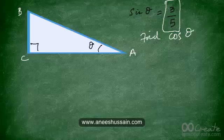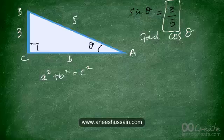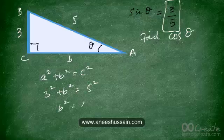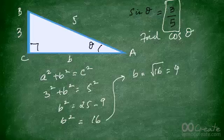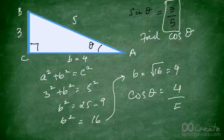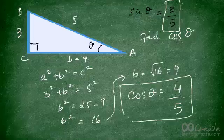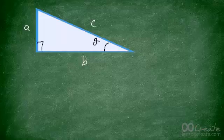Sine of theta equals 3 upon 5, so the opposite side is 3 and the hypotenuse is 5. Calling the base B and applying the Pythagorean theorem: 3 squared plus B squared equals 5 squared, giving B squared equals 25 minus 9 equals 16, so B equals 4. Therefore cos theta — adjacent over hypotenuse — is 4 upon 5.